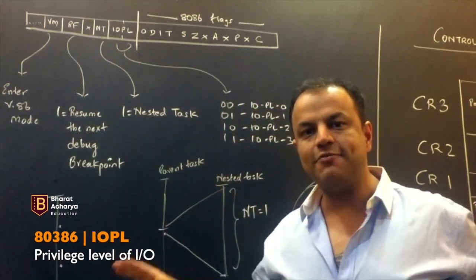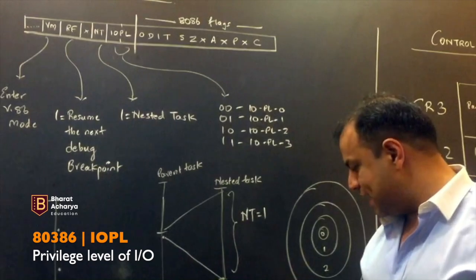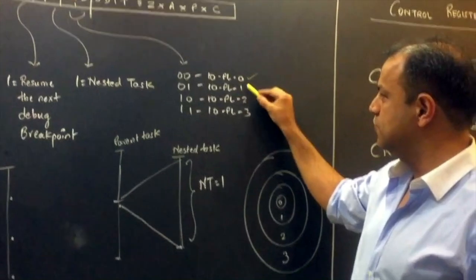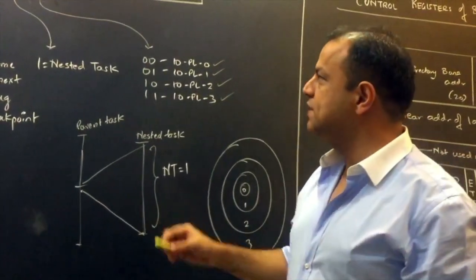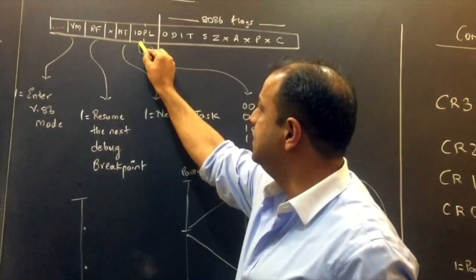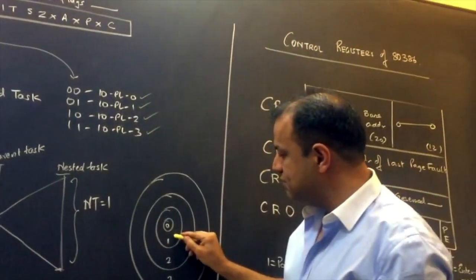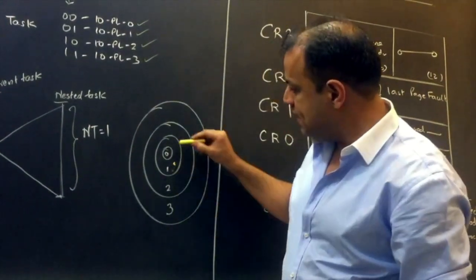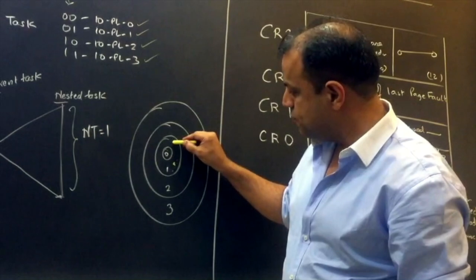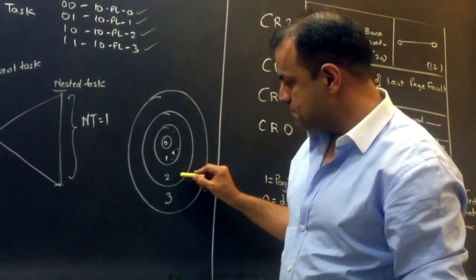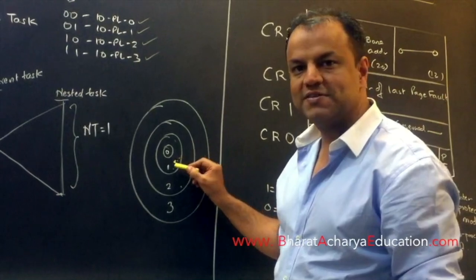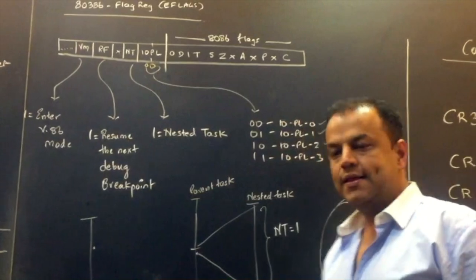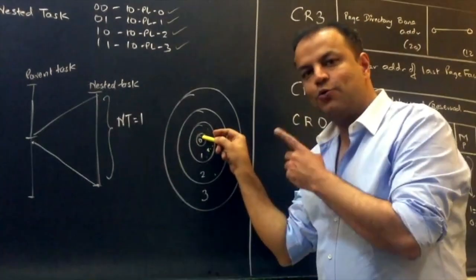The privilege level assigned to IO devices is stored in IOPL. IOPL is two bits because there are four privilege levels: 00 means IO privilege level 0, and similarly PL1, PL2, PL3. Suppose these two bits are kept as 01 — that means all IO devices are placed at PL1. Any program of PL0 or PL1 can access them, but programs of PL2 and PL3 cannot, because that is higher privilege than them.